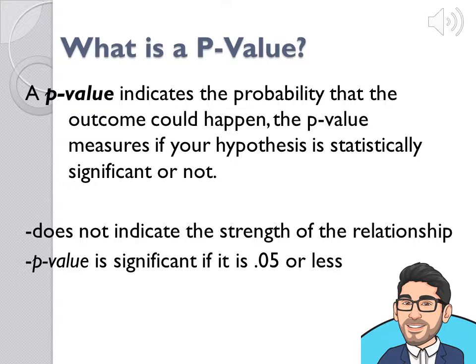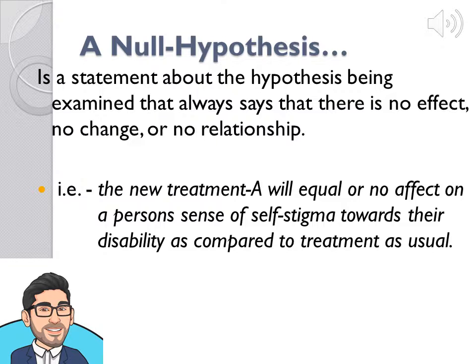More on the null hypothesis shortly. Keep in mind, a p-value does not indicate the strength of the relationship — that would be a whole new subject. A p-value is significant if it is less than .05, preferably. A null hypothesis is a statement about the original hypothesis being examined, but the null always says that there is either no effect, no change, or no relationship between the variables. Using our previous example, the null hypothesis could sound something like: the new treatment A will equal or have no effect on a person's sense of self-stigma towards their disability as compared to treatment as usual.